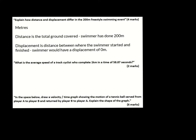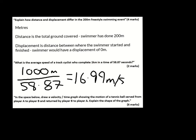Next question: what is the average speed of a track cyclist who completes one kilometre in 58.87 seconds? Remember speed is distance over time. Distance must be in metres, not kilometres — so convert 1 kilometre to 1000 metres. Distance divided by time equals 1000 divided by 58.87, which equals 16.99 metres per second. You won't be given the equations, so you need to know them along with the correct units.